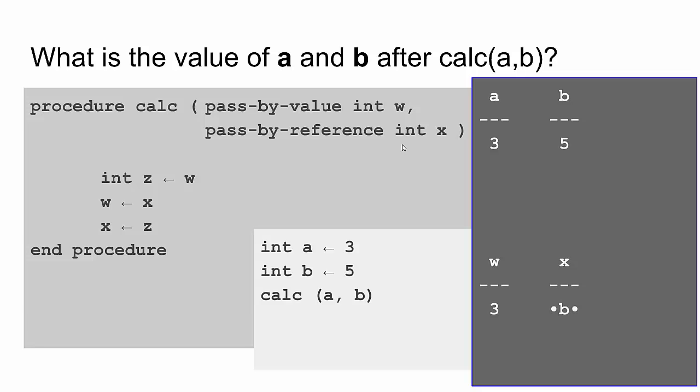So we're going to create our int z and assign that z the value that's in w. Well, w is 3, so we're going to set z to 3. The next one says take what's in x. Well, what is in x? x points to b, so x contains a value 5. And we're going to put that in w. So we overwrite the 3, and we put the 5 in w. Lastly, we're going to take what's in z. And what's in z is 3. And we're going to assign that to x, which really points to b. So we're going to put that 3 in b. And the answer to the question, what is the value of a and b after calc ab? Right now, a and b are both 3. And the reason b changed is because we passed it by reference and not by value. a remains unchanged because we passed it by value and not by reference.